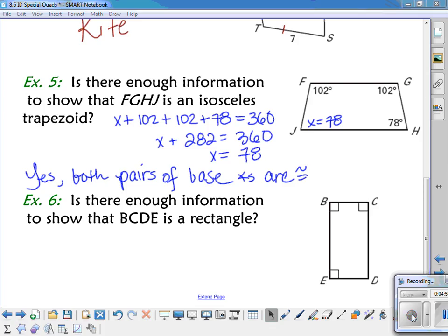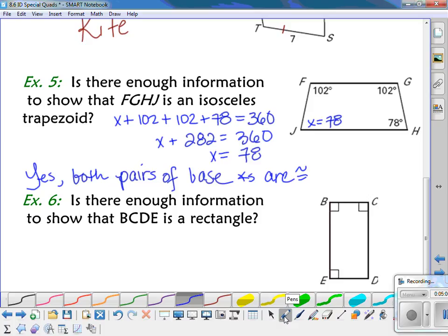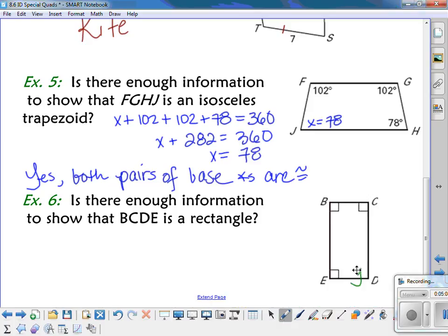All right, then finally, on example 6, is there enough information to show that BCDE is a rectangle? So again, I'm missing an angle here. I'll call it Y. If I add my angles up, they have to add up to 360 because it's a quadrilateral.